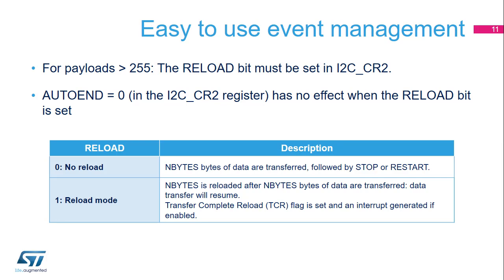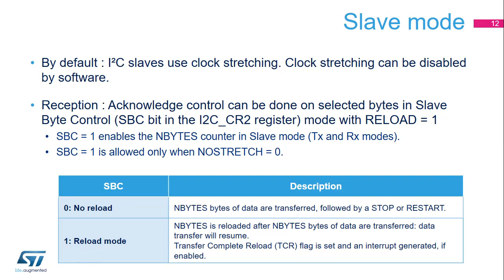The I2C clock is stretched low as long as the TCR bit is set. The reload bit is used in master mode when the payload is greater than 255 bytes, and in slave mode when slave byte control is enabled. When the reload bit is set, the auto-end bit has no effect. By default, the I2C slave uses clock stretching, but this feature can be disabled by software. In receive mode, the slave acknowledge on received byte behavior can be configured when slave byte control mode is selected together with the reload bit being set.